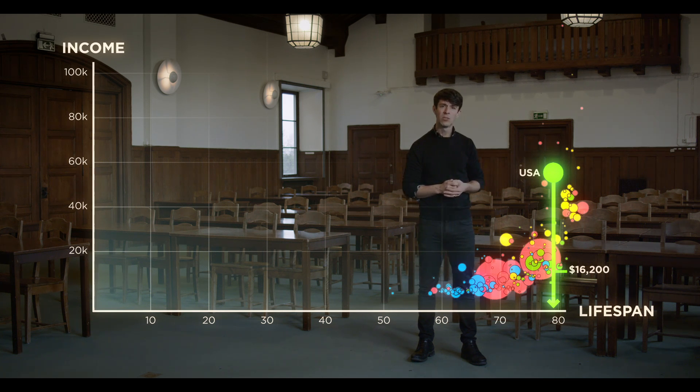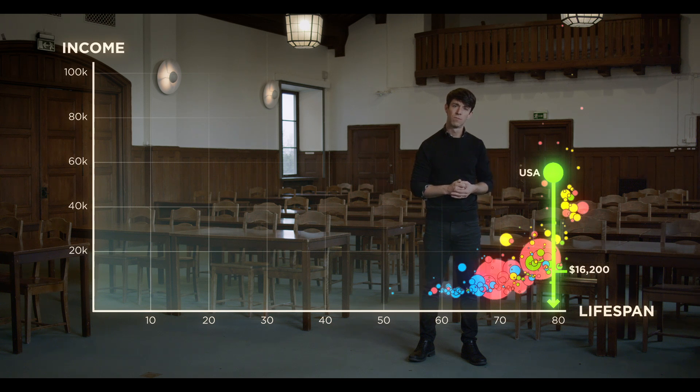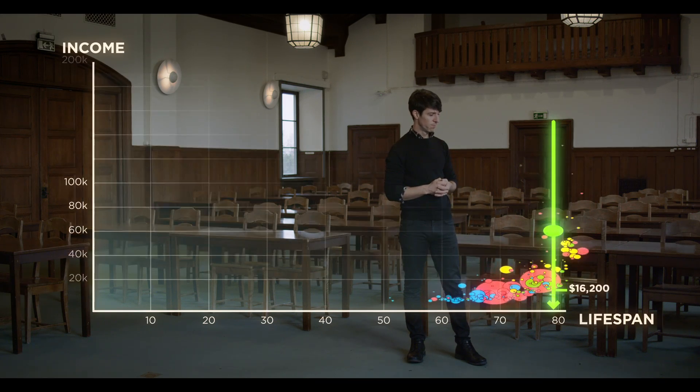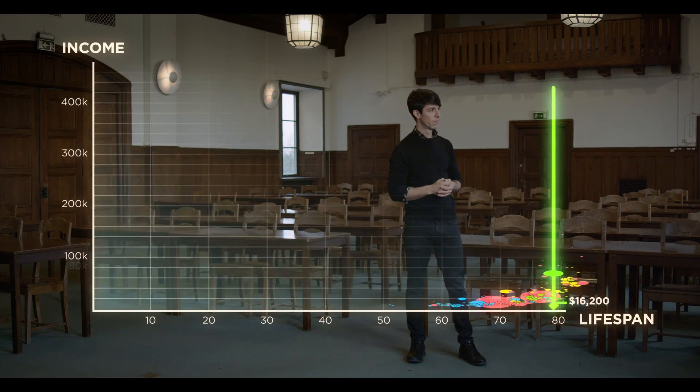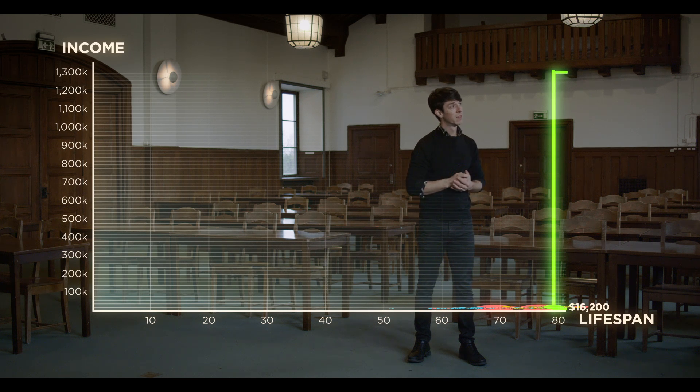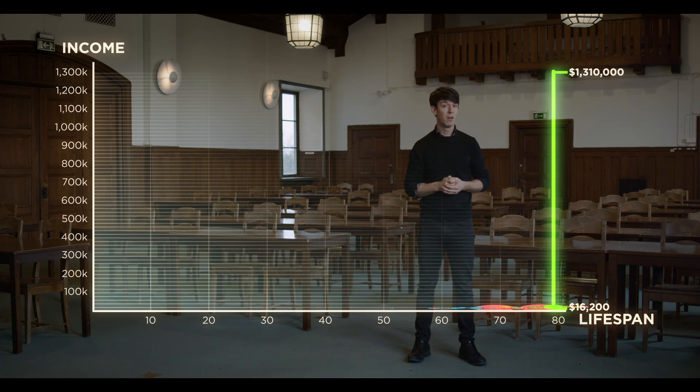So why does the national average income increase? To understand, we have to look at the entire distribution, up to the top 1%. And to do that, we have to zoom out a bit. Among the American top 1%, the average income is $1.3 million.